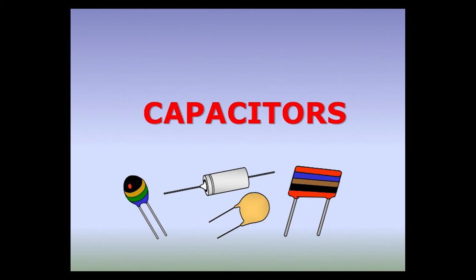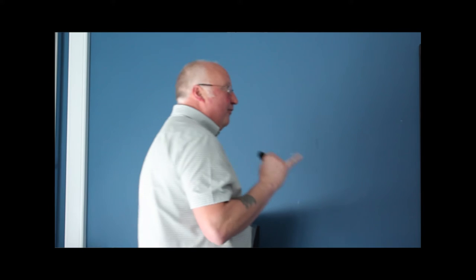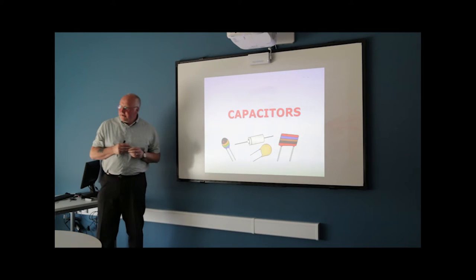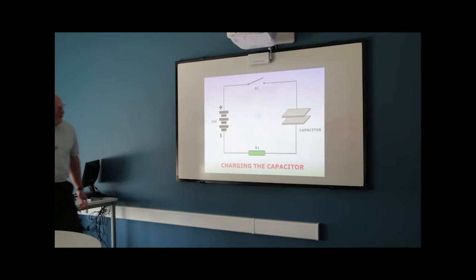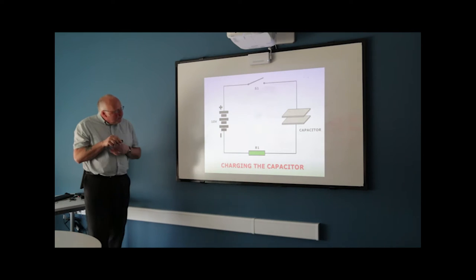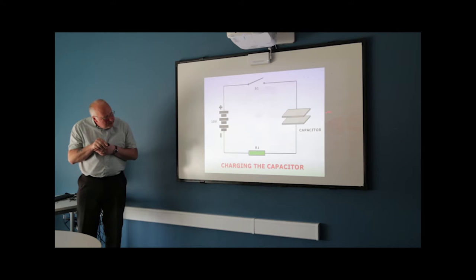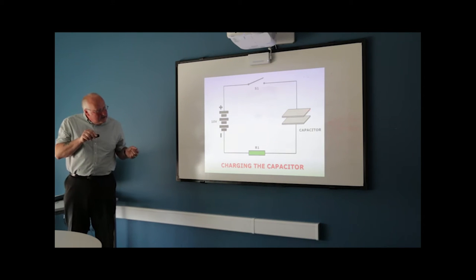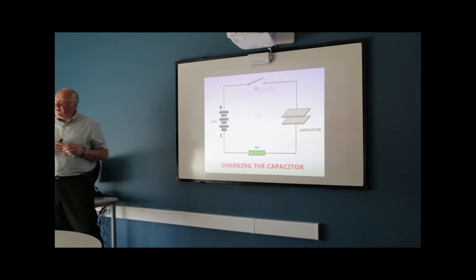We're going to continue looking at capacitors and how they work within an electrical circuit. As we learned before, a capacitor is a very simple component but it is used in everyday electrical circuits. A capacitor can store an electrical charge. We have a simple circuit on the right-hand side. A capacitor is effectively made from two conductive plates separated by an insulator — that insulator could be air or another form of insulator, which we call a dielectric.